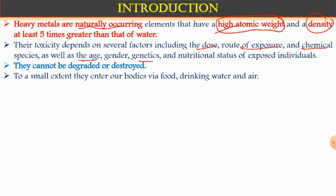A small amount enters the body basically via food, via air, and via drinking water — these are the three most important sources. Nowadays food is hybrid; in agriculture, a lot of pesticides, insecticides, and herbicides are used, and these chemicals contaminate the plant. When it comes to the market and to our home, we eat that contaminated food. So a very little amount of these metals enters our body via these three routes.